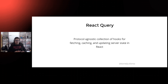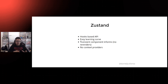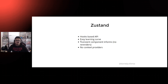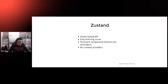But at a certain time there also came an issue: now we're going to need UI state — what are we going to do? Are we going to continue using Redux or Context? Well, we started using Zustand. Zustand is pretty great because it's a hooks-based API, and being all React hooks it has an amazing learning curve. It does a thing I really love called transient component subscriptions, meaning your component won't re-render unless it absolutely needs to or you make it explicit. Zustand is also great because it doesn't have context providers — it's just hooks.